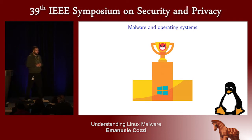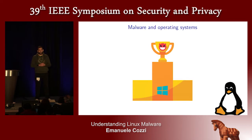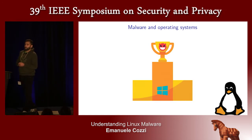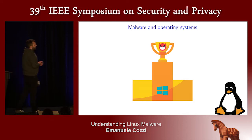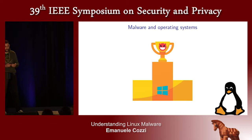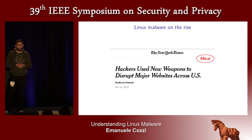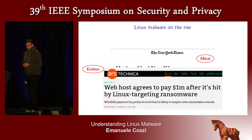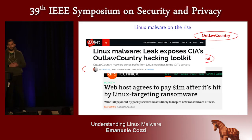Linux malware are getting more popular every day. They are widespread, running in devices we have all around us on a daily basis, because Linux runs on a lot of different devices, including smaller IoT devices. For example, the Mirai botnet was used to disrupt major websites, Erebus was used to ask for huge ransoms, and the CIA probably developed the Linux malware Outlaw Country to sniff network data.